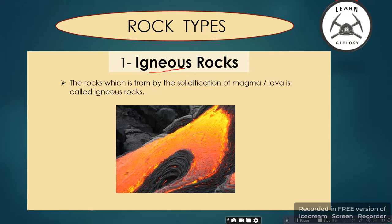The first one is igneous rock. The word 'igneous' is derived from a Latin word meaning fire. Its definition is: the rock which is formed by the solidification of magma or lava is called igneous rock. When this fluid is inside the earth, it is called magma, and when it comes out to the earth's surface, it is called lava.